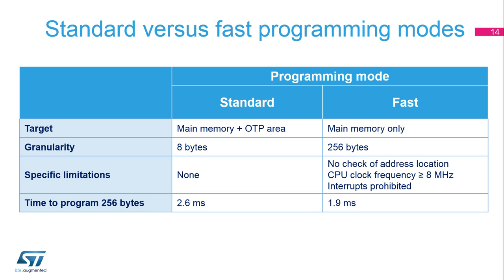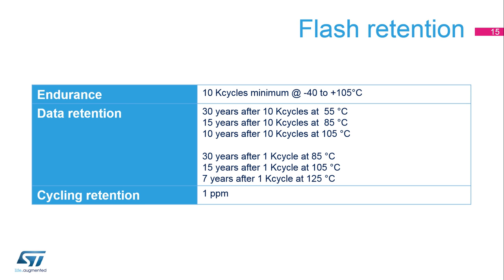It takes 2.6 milliseconds to program 256 bytes in standard mode and 1.9 milliseconds in fast mode. The flash memory is guaranteed for a minimum of 10,000 cycles up to 105 degrees Celsius. Data retention is 30 years after 10,000 cycles at 55 degrees Celsius, 15 years after 10,000 cycles at 85 degrees Celsius, and 10 years after 10,000 cycles at 105 degrees Celsius.